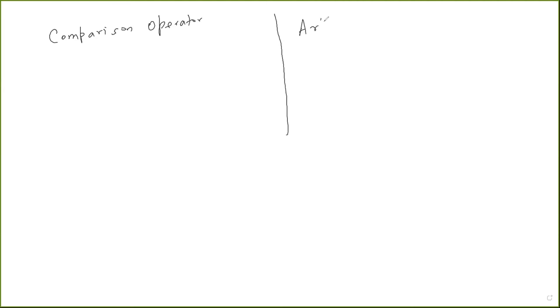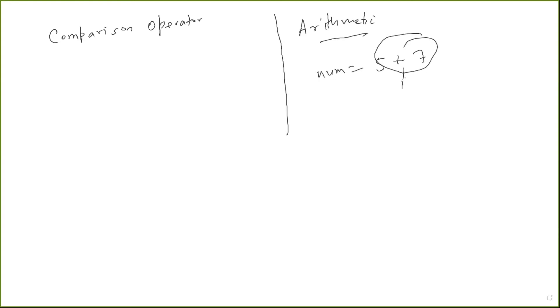Comparison operators are operators that return or generate a Boolean variable, based on whether a comparison is correct or not. What I mean by that is — if you recall what happened in arithmetic operators, there were some operations performed on some numbers. Suppose five plus seven equals num — this resulted in a number which was 12, allocated to the variable num. A number was being returned. But in comparison operators, we have Boolean variables — we can have true or false as the output.